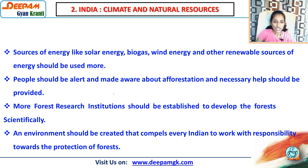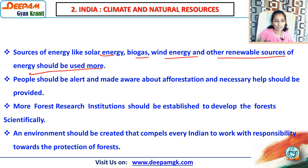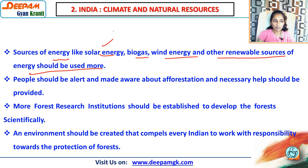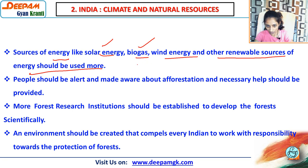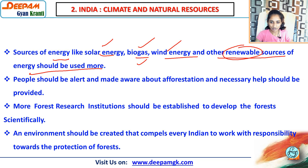Sources of energy like solar energy, biogas, wind energy, and other renewable resources should be used more instead of only using trees and jungle resources. Renewable resources are regenerated — for example, solar panels and solar cookers. Street lights on roads use solar panels. Biogas is generated from farming and animal waste. Wind energy should also be used. These are renewable resources that will never end, so we must use them.